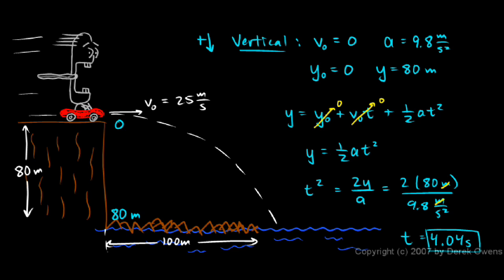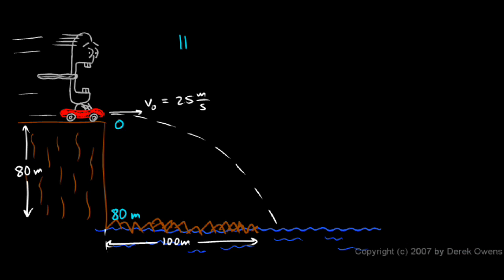Now I'll erase this and consider the horizontal motion. Again, the key point here is that the horizontal and vertical motion are independent of each other. Horizontally, let's write down what we know. The initial velocity is 25 meters per second. That's the initial velocity and it's entirely horizontal. The acceleration is zero.